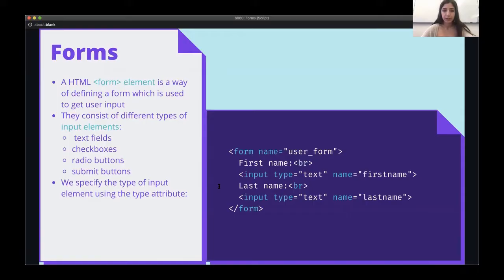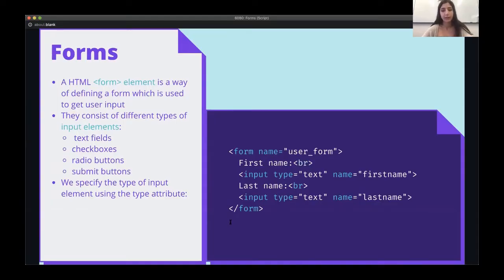Notice that we've specified the type equals text attribute. We can use the type attribute of an input tag to specify the type of that input. Some valid attribute values are button, radio, checkbox, or email, and there are plenty of others.